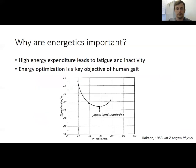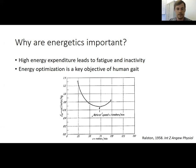So why are energetics important? In our patient populations, high energy expenditure often leads to negative effects like fatigue and inactivity. More broadly, we think that energy optimization is a key objective of human gait. On this figure at the bottom of the slide, from a study that is over 60 years old, they measured energy expenditure across a variety of different speeds. If you normalize energy expenditure to the distance traveled — what we call cost of transport, similar to miles per gallon for a car — the human body tends to walk at speeds that minimize this energy expenditure.